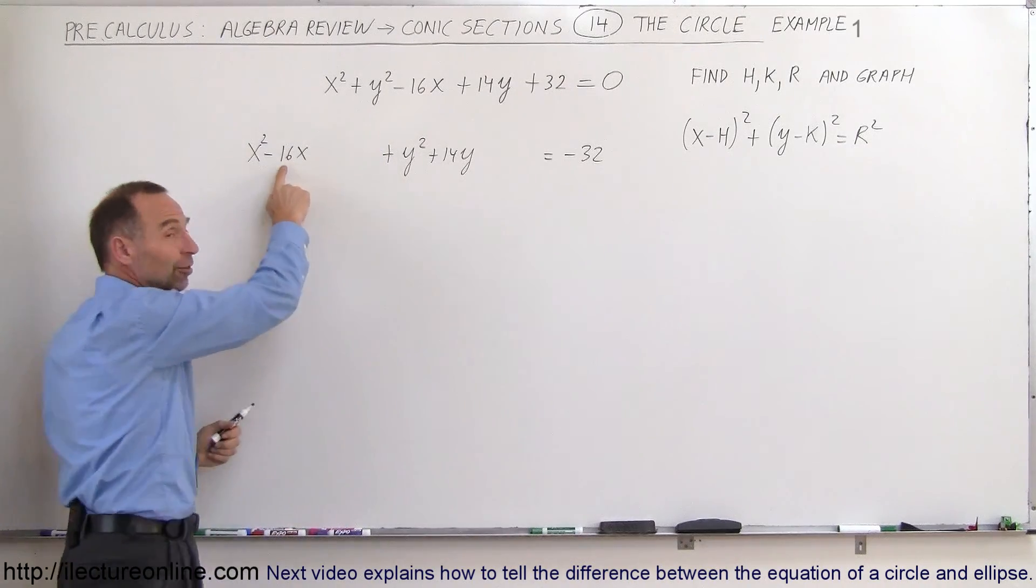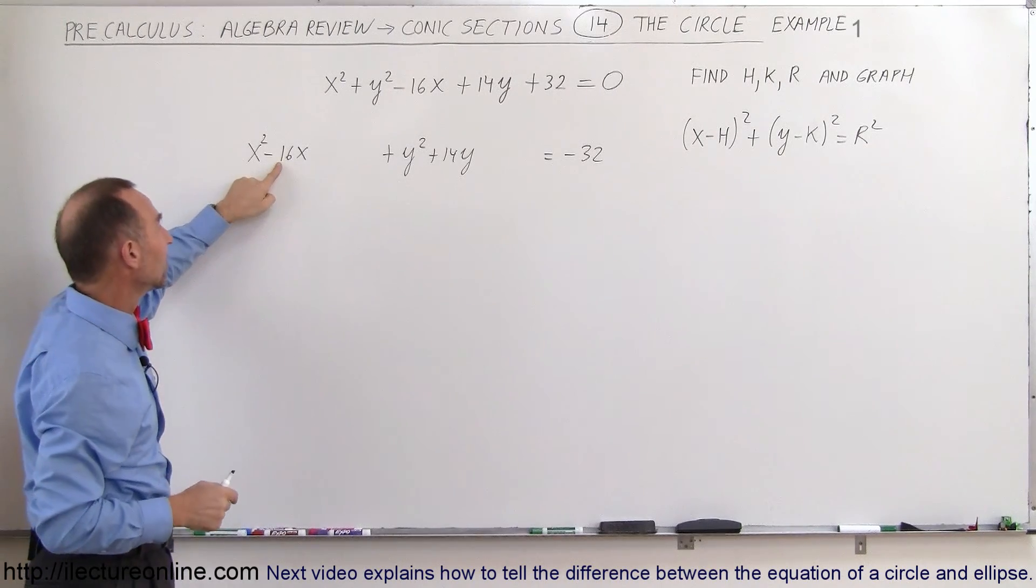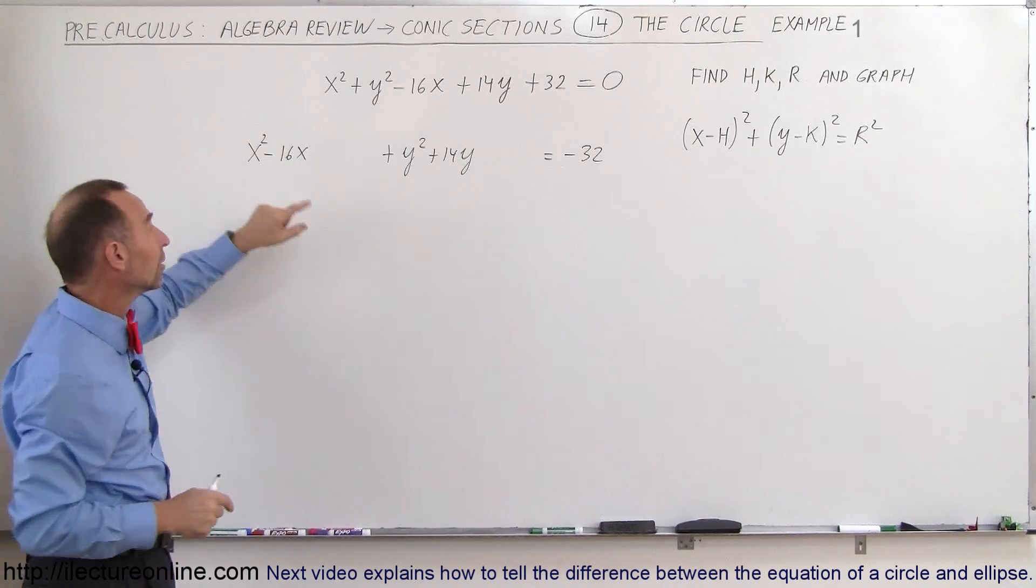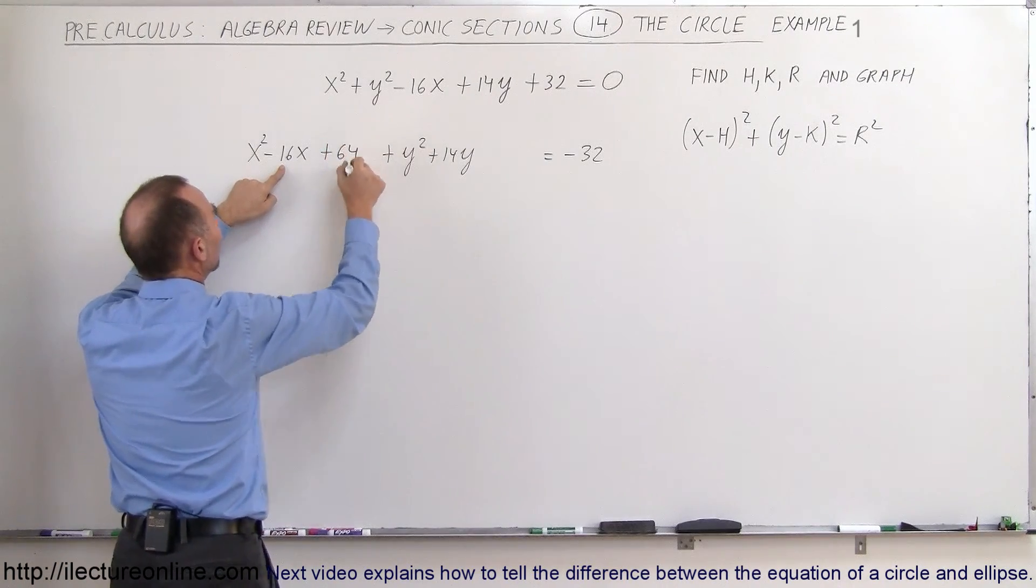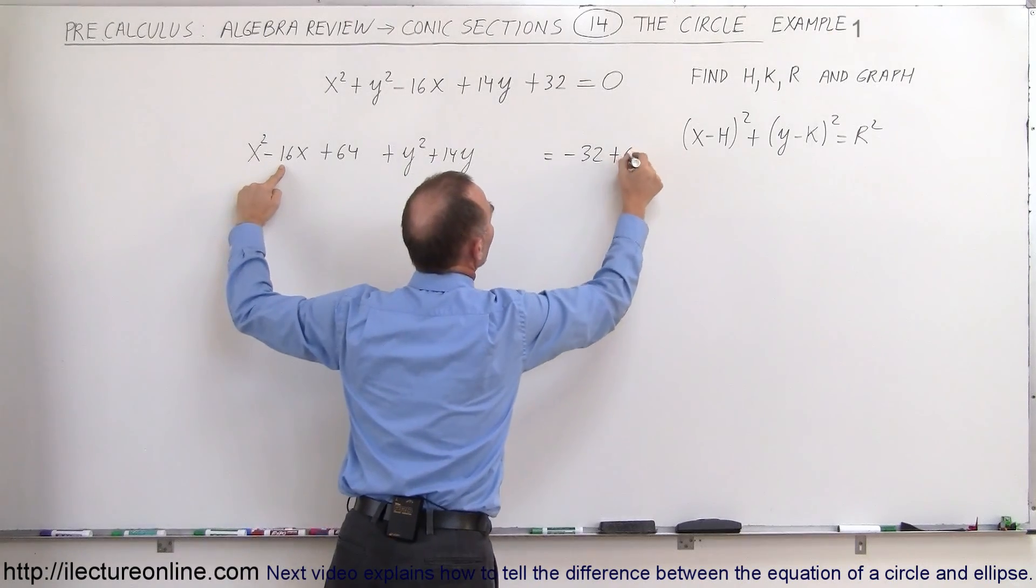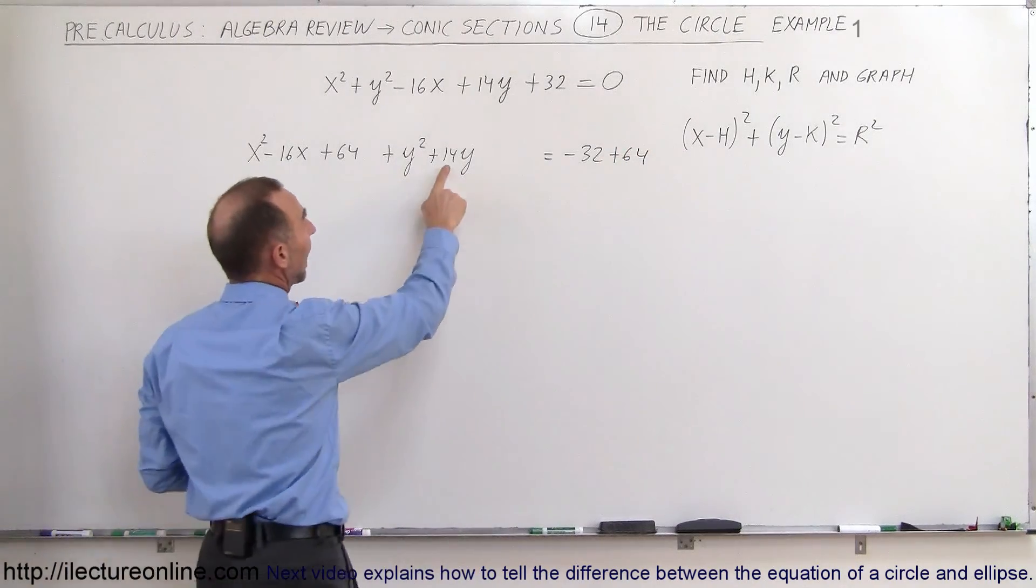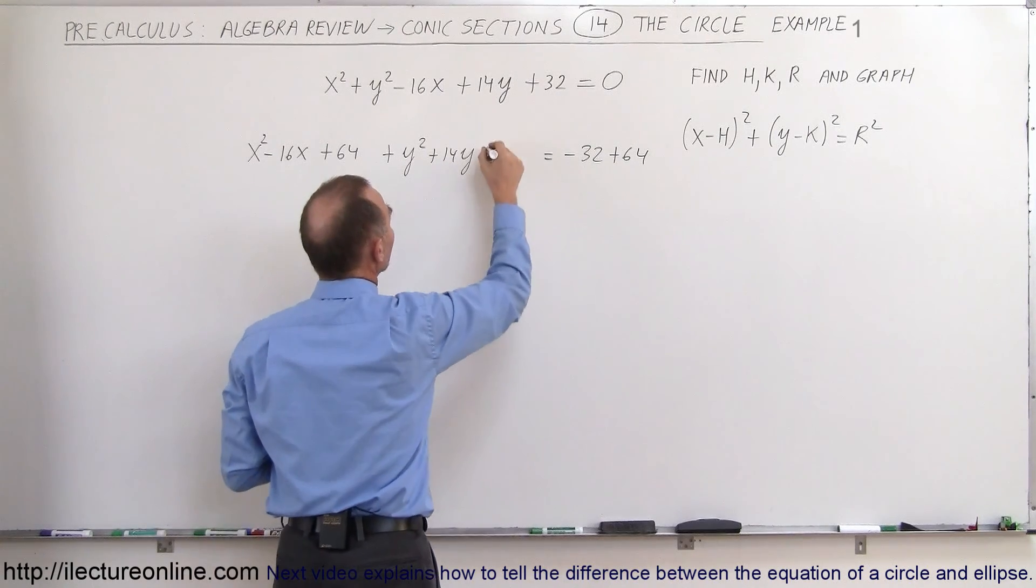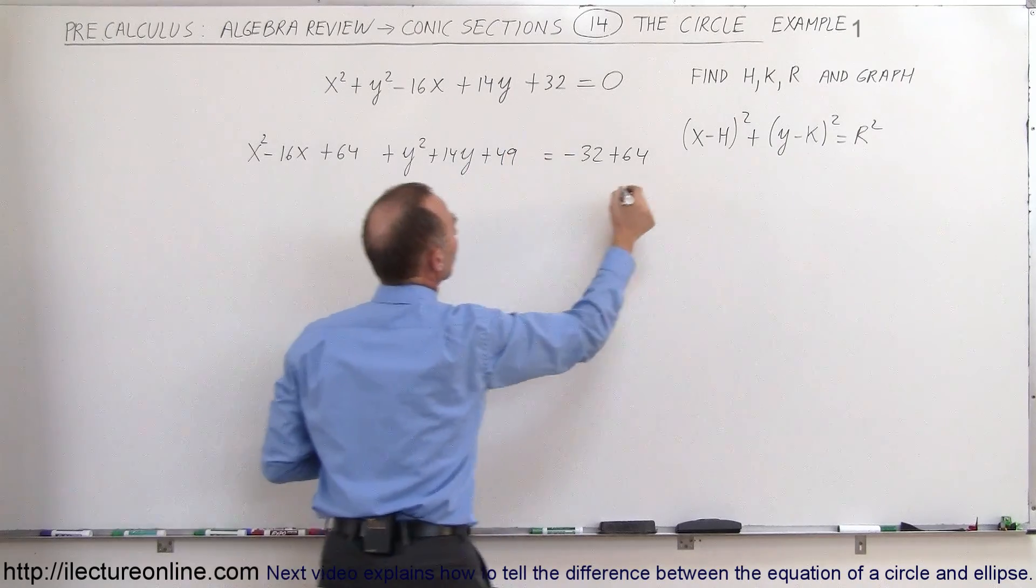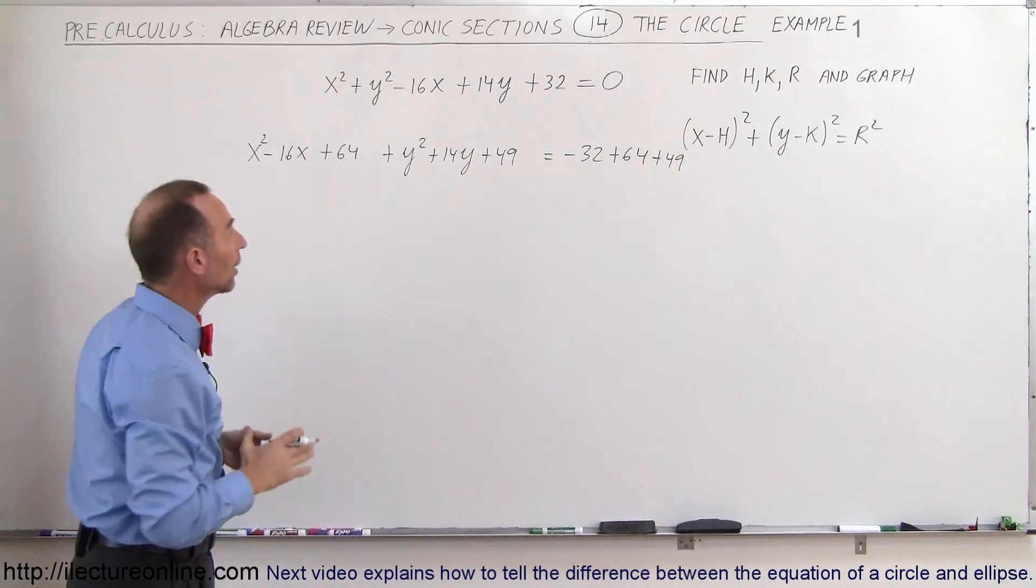What you do is take the coefficient of this divided by 2 and square it. Minus 16 divided by 2 is minus 8 squared, you get 64, so we're going to add 64 to the left side, which means we need to add 64 to the right side as well. We do the same over here: take half this coefficient, half of 14 is 7 squared to get 49, so we're going to add 49 here, that means we need to add 49 to the right side as well.